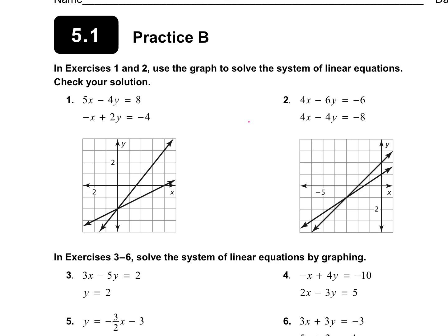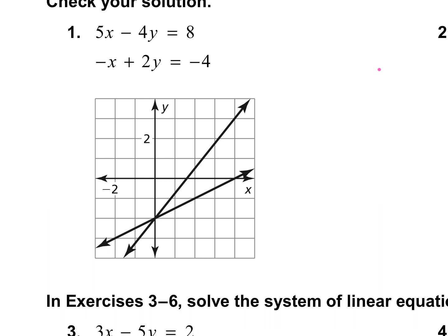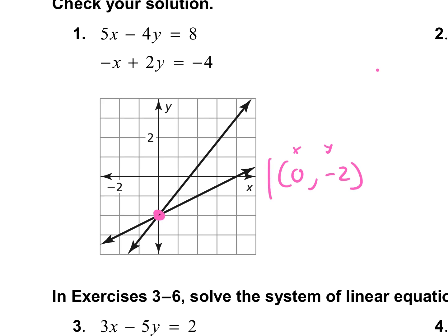Here it actually graphs it for us, so we look at the graph to tell us our answer. Does anybody remember where our answer would be? Looking at the graph, what would our answer be? Zero, negative two. Perfect — it's where the two lines intersect, so that would be (0, -2). Remember, it's always x and then y. We're at zero on our x-axis and we go down to negative two on our y-axis. So this would be our answer.